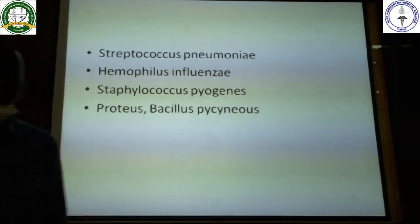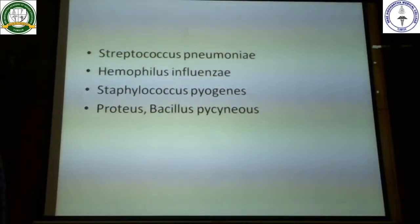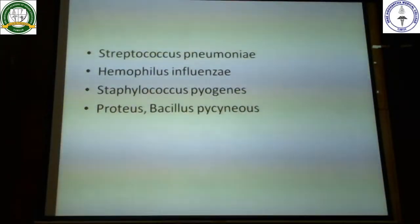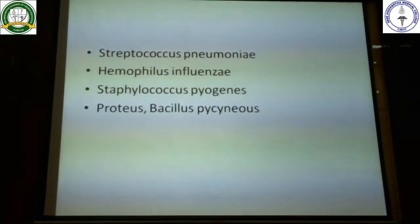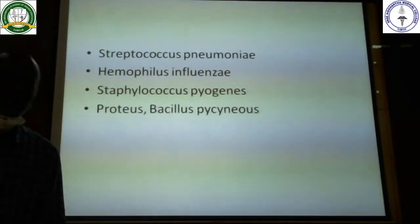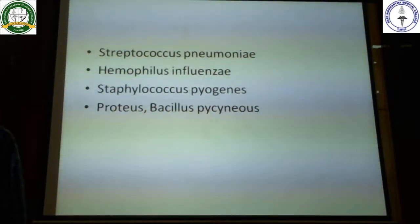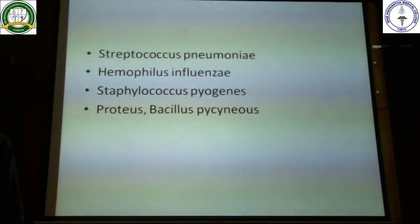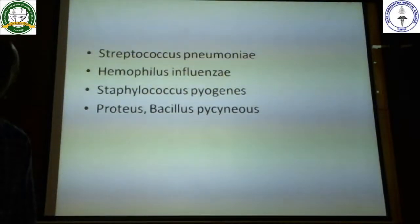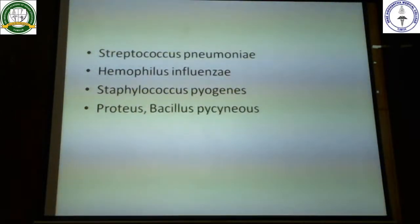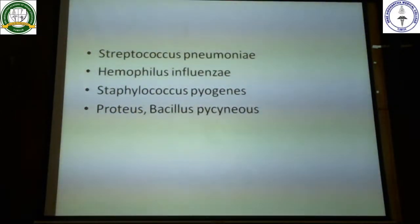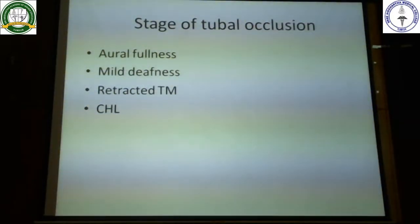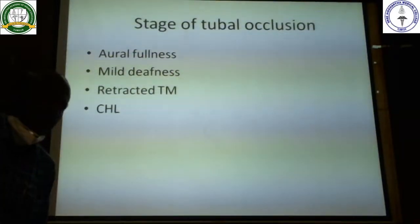Organisms associated with acute otitis media include Streptococcus pneumoniae (most common), Haemophilus influenzae, Staphylococcus pyogenes, and Proteus. The first three organisms are commonly isolated from the upper respiratory tract, which is reflected in acute otitis media as well. More than 80% of cases involve Streptococcus pneumoniae.